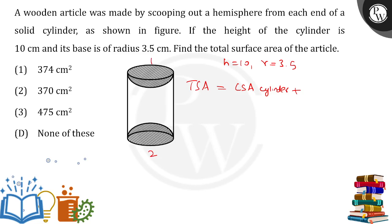So the total is the curved surface area of the cylinder plus two times the CSA of the hemisphere. The formulas are: 2πRH for the cylinder and 2πR² for each hemisphere, so 2 times 2πR².